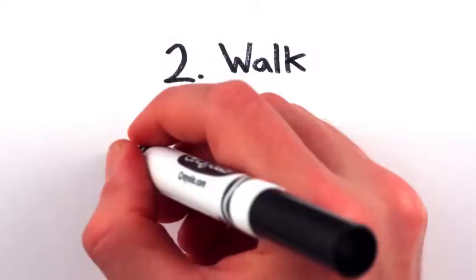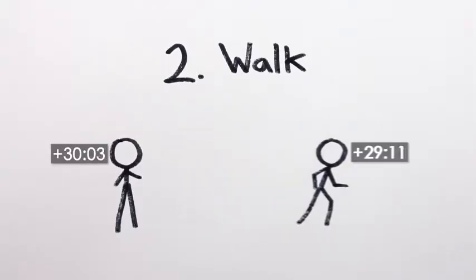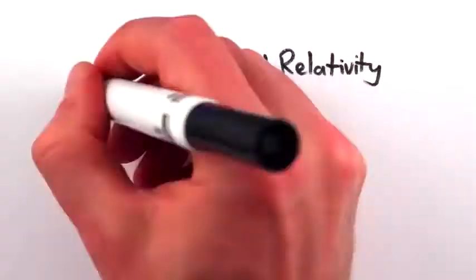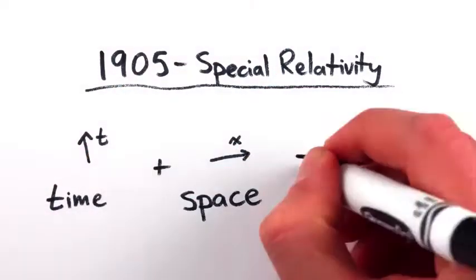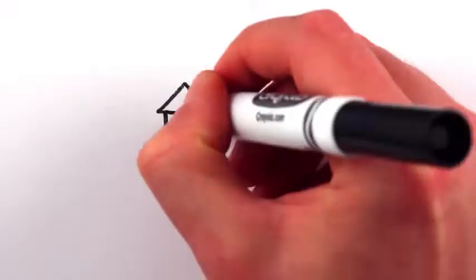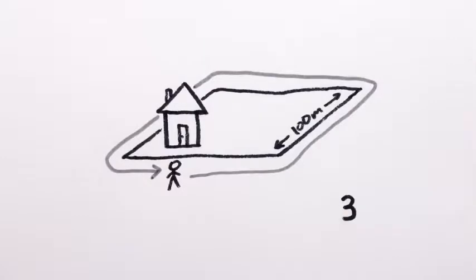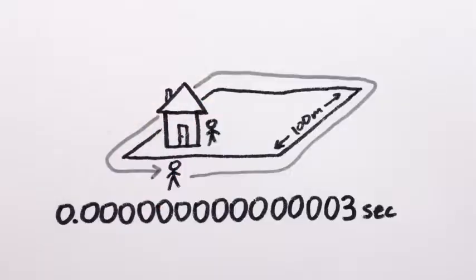To do that, start walking, and you'll travel through time relative to someone standing still. We've known for over a century that time and space are really just two components of a single space-time, and the faster you move, the slower time will pass for you. If you take a walk around the block, you'll be three femtoseconds younger than your friend who stayed home.